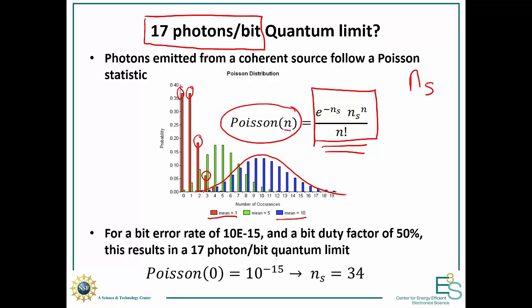Now, if we want a bit error rate of 10 to the minus 15, meaning, well, there will be a mistake every 10 to the 15 bits of information communicated, and we consider that we have a bit duty factor of 50%. That means that there's an equal amount of zeros and of ones.